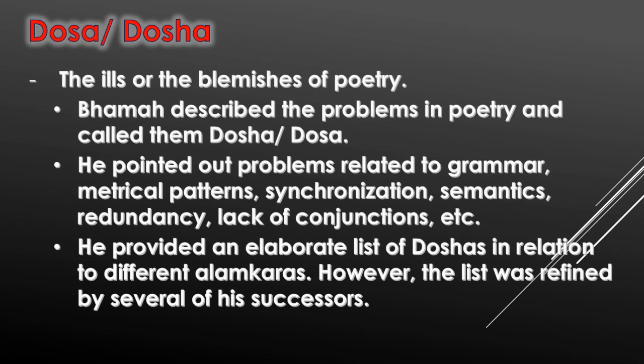Apart from Shabda Alamkaras and Artha Alamkaras, Bhama also described the doshas in poetry — the ills and blemishes of poetry. He said that there were certain problems in writing and describing poetry which were referred to as doshas. He pointed out problems related to grammar, metrical patterns, synchronization, semantics, redundancy, and lack of conjunctions.